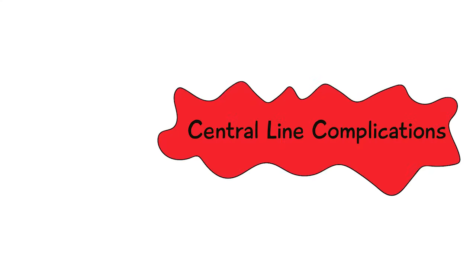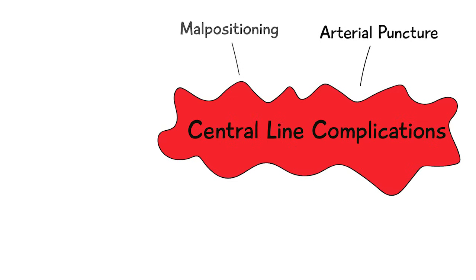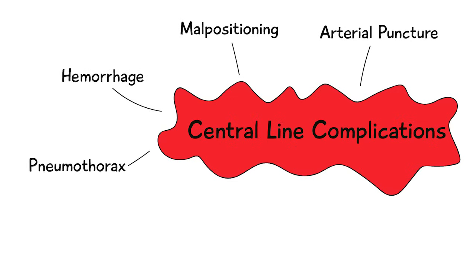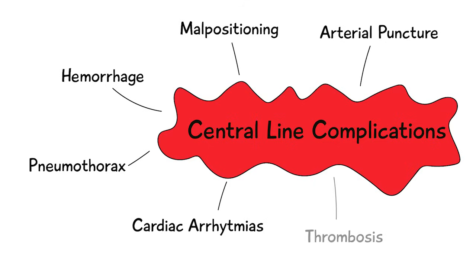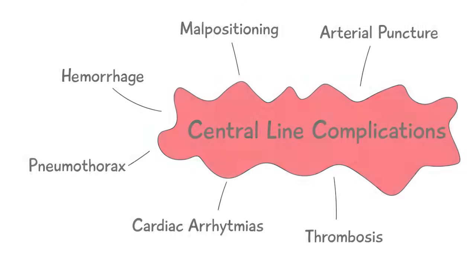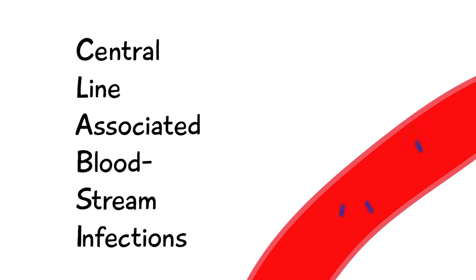Common complications of central line placement include arterial puncture, catheter malpositioning, hemorrhage and hematoma, pneumothorax, cardiac arrhythmias, and thrombosis. Central line associated bloodstream infections are of particular concern due to their high degree of patient morbidity and increased healthcare costs.